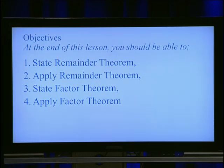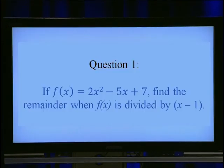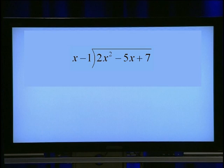Before I proceed with the main topic, let me ask you one question. If f(x) is equal to 2x² minus 5x plus 7, find the remainder when f(x) is divided by x minus 1. You can find the remainder by applying the long division method. In this division, the divisor is x minus 1 and the dividend is 2x² minus 5x plus 7.